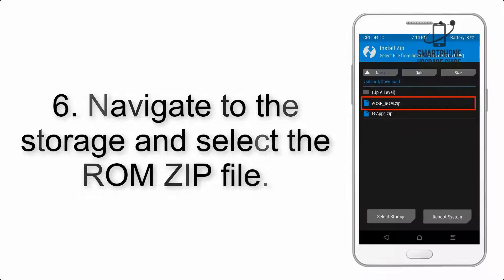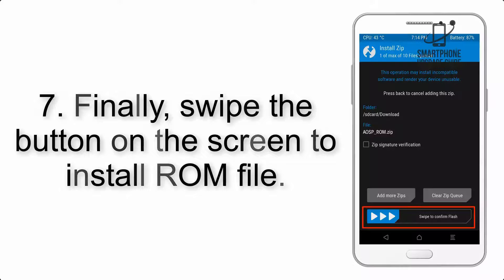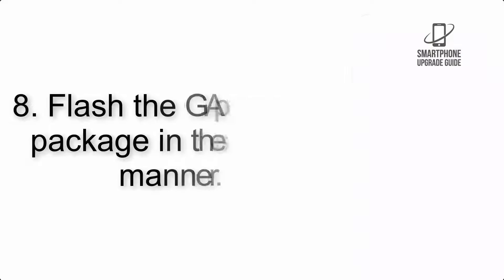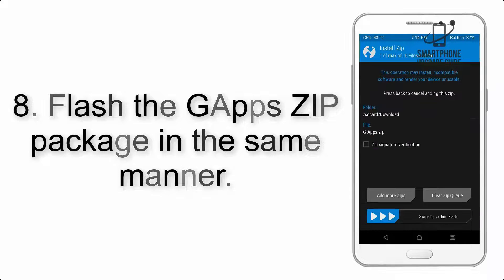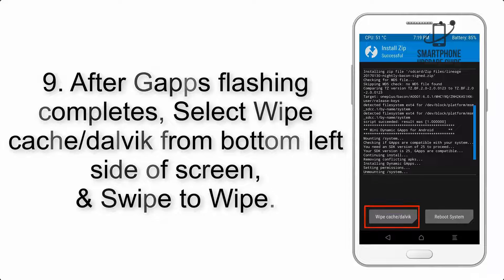Step 5: go back to the recovery main screen and tap on the Install button. Step 6: navigate to the storage and select the ROM zip file. Step 7: swipe the button on the screen to install the ROM file. Step 8: flash the GApps zip package in the same manner.